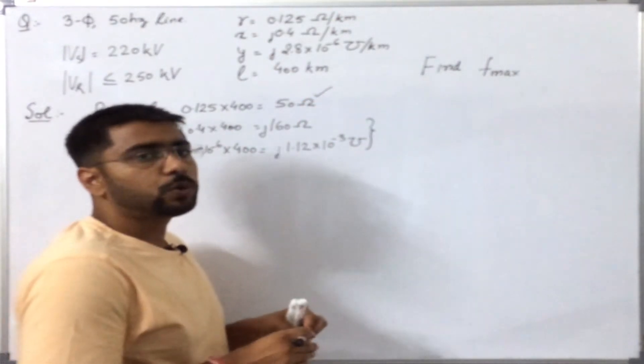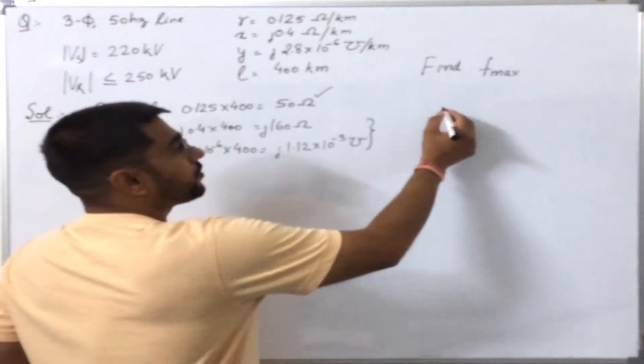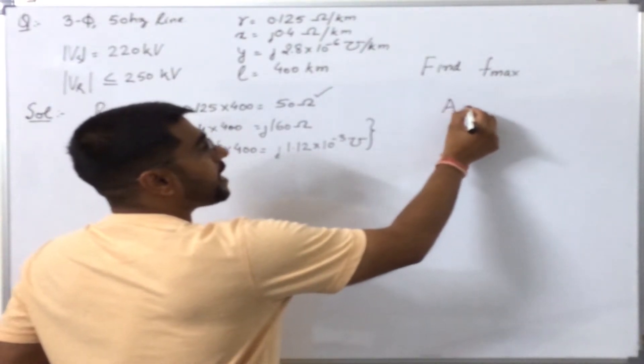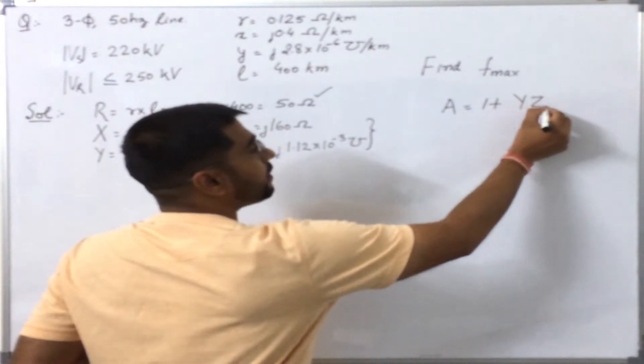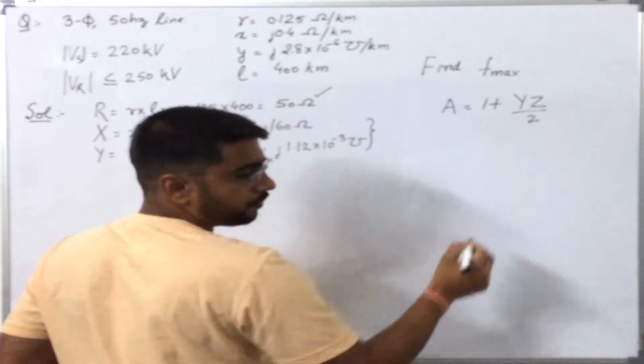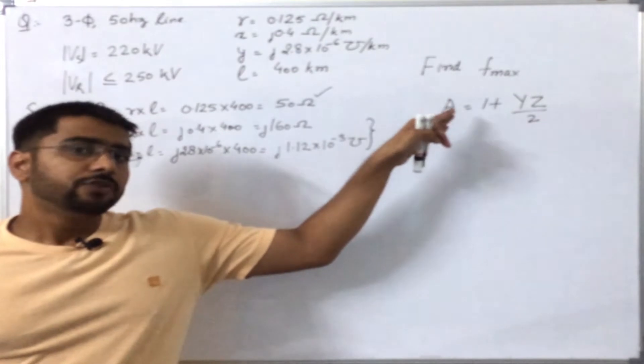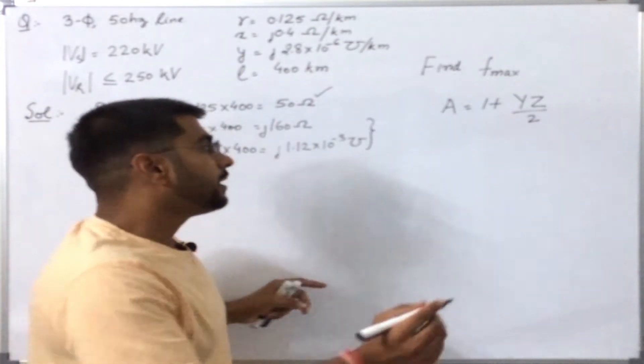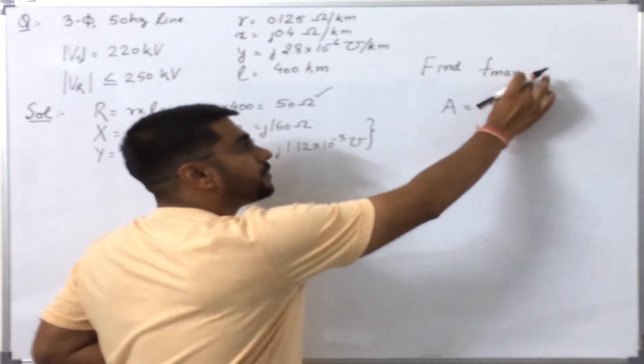We are going to use the equivalent pi model. For that, we know that A is given by 1 plus YZ by 2. Now, before going further, we should know that Y and Z will change with frequency.